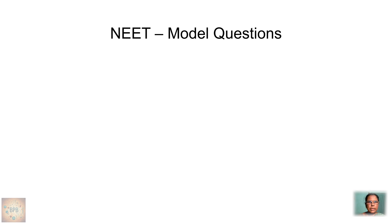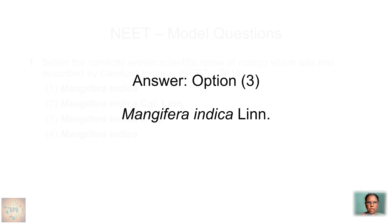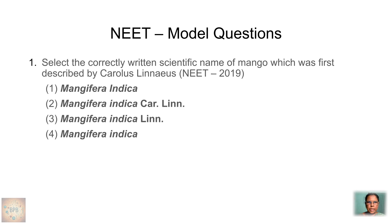NEET practice questions: Question 1 — Select the correctly written scientific name of mango, which was first described by Carolus Linnaeus (2019 NEET). Options: (1) Mangifera Indica; (2) Mangifera Indica Car.Lin.; (3) Mangifera indica L.; (4) Mangifera indica. The answer is option 3. Option 1 is wrong because the first letter of the specific name should be small. Option 2 is wrong because the author abbreviation should be L. or Lin., not Car.Lin. Option 4 is wrong because author citation is missing.